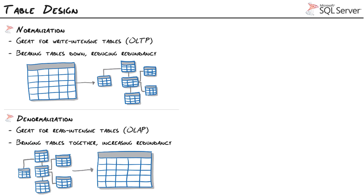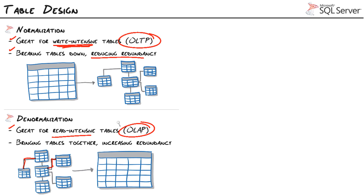Normalization is all about breaking our tables down into focused containers to improve write performance, so they're great for write-intensive tables. It's common in the world of OLTP — online transaction processing — where we have a lot of writes coming into the system. By breaking down tables we reduce data redundancy and improve write performance. Denormalization is the exact opposite: rather than shooting for many smaller tables, we shoot for fewer larger tables to improve read performance, since joins can slow things down. This design is commonly seen in data warehousing and online analytical processing.